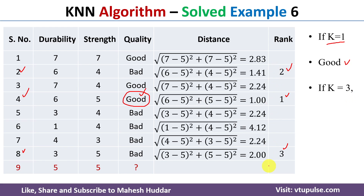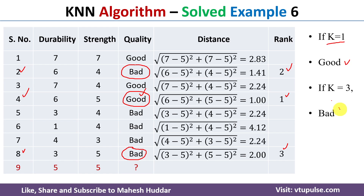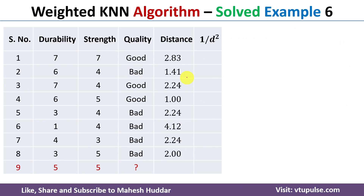When k=3, we consider the three nearest neighbors: the fourth (rank 1), second (rank 2), and eighth (rank 3). Their labels are 'good', 'bad', and 'bad' respectively. Since the majority is 'bad', the new example is classified as 'bad'. So with k=1 the result is 'good', and with k=3 the result is 'bad' using basic KNN.